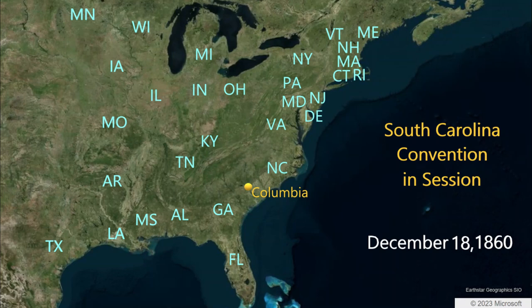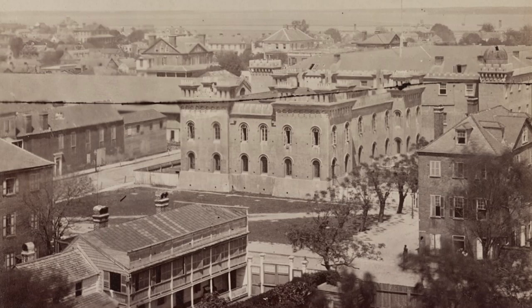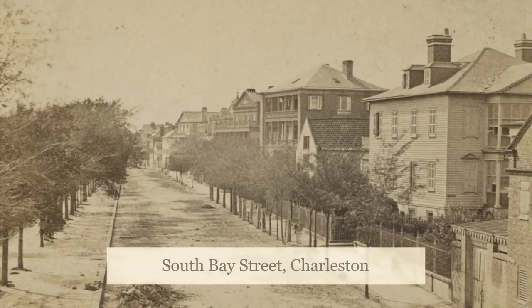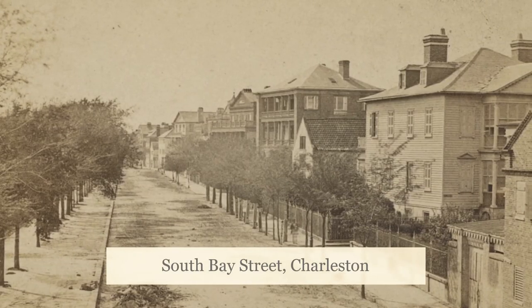The next day, December 18th, the Columbia delegates take the train to Charleston, avoiding a smallpox epidemic. There in Charleston, the convention is now in session. The delegates have a committee to draw up an ordinance for secession. The convention will also ask Washington to cede all federal properties within South Carolina to the state, and elects representatives to meet with the governments of other slave states to form a Southern Confederacy.